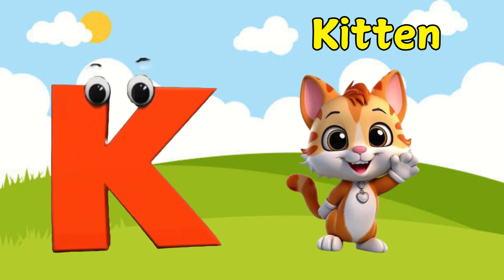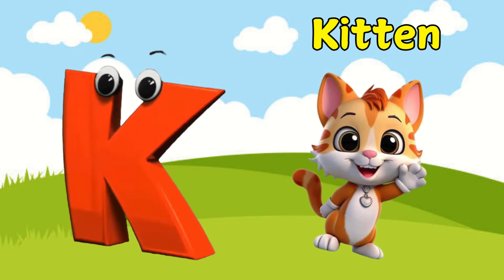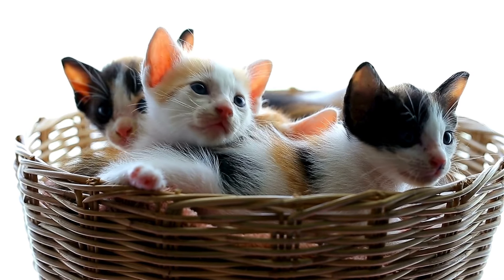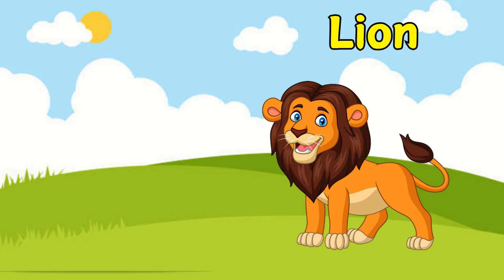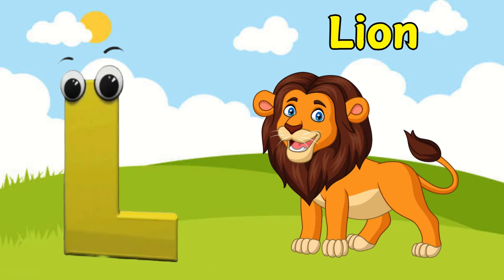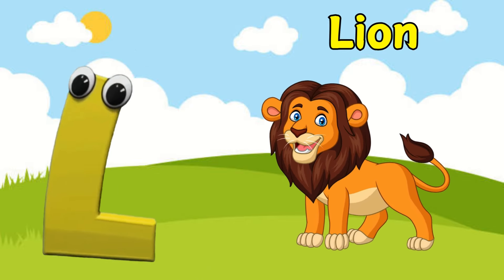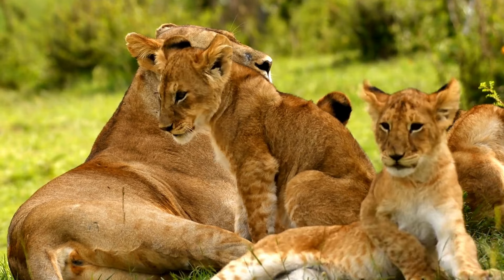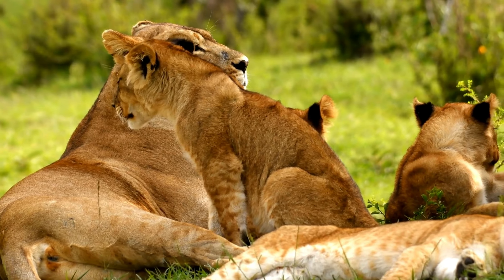K is for kitten, k-k-k-kitten. K is for kitten, k-k-k-k. L is for lion, l-l-l-lion. L is for lion, l-l-l-l.